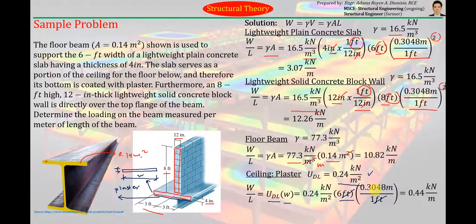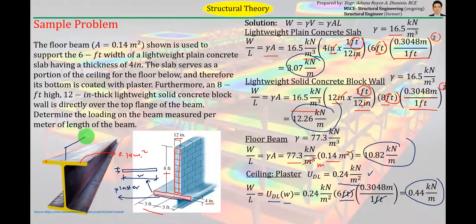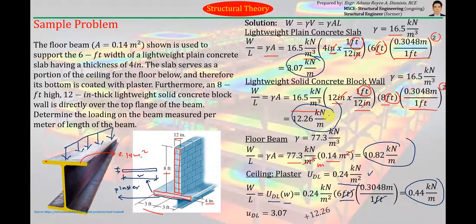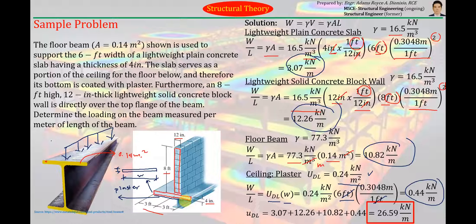So all in all those are the loads that are being carried by the floor beam. The weight from the slab, the weight from the block wall, the weight from the plaster, and lastly its own weight. So overall in sum, the total load, the total uniform load that is being carried by the floor beam, which is this, is just equal to their sum which will be equal to 3.07 plus 12.26 plus 10.82 plus 0.44 which will be totaled to 26.59 kilonewton per meter. So meaning that the floor beam that we are talking about here carries a uniformly distributed load equal to 26.59 kilonewton per meter and that is the final answer.